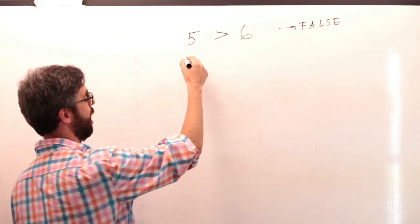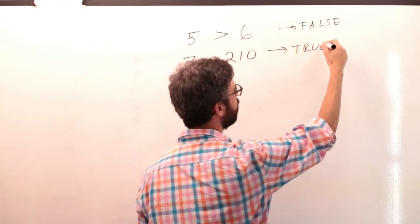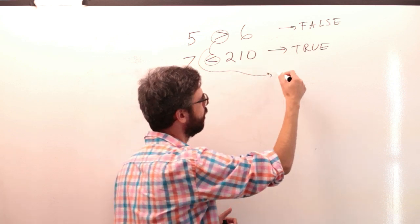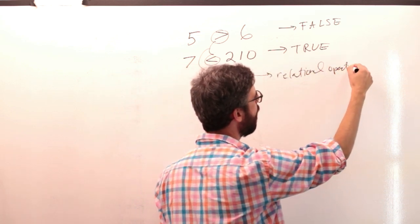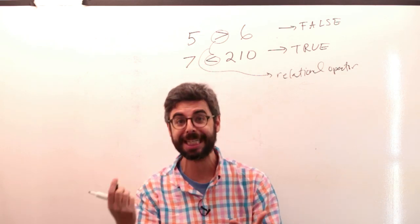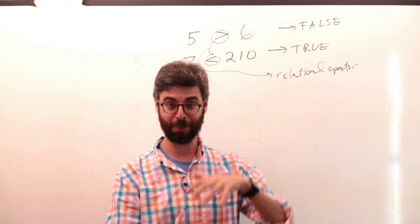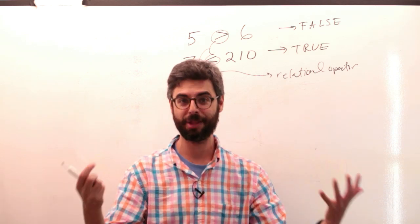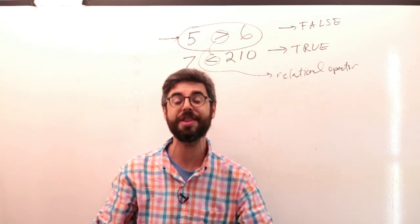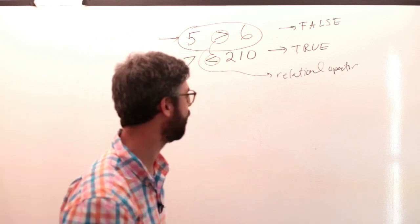Here's another one: seven is less than 210. This is true. You can see I'm starting by creating these Boolean expressions using something called a relational operator. It's an operator that is going to compare two numbers. There's lots of ways eventually in code that you'll see something that's true or false, but a good way to start is just comparing numbers. Are these numbers equal? Is one number bigger than the other one? Or is one number less than the other one?